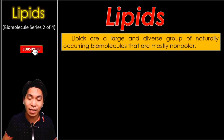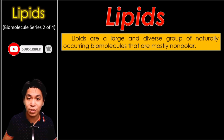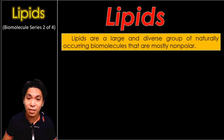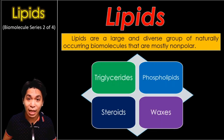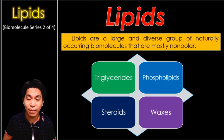Lipids are a large and diverse group of naturally occurring biomolecules that are mostly non-polar. Non-polar means they don't mix with water well, so these biomolecules are composed of molecules that despise water. There are four types of lipids that we will discuss: namely the triglycerides, the phospholipids, steroids, and waxes.